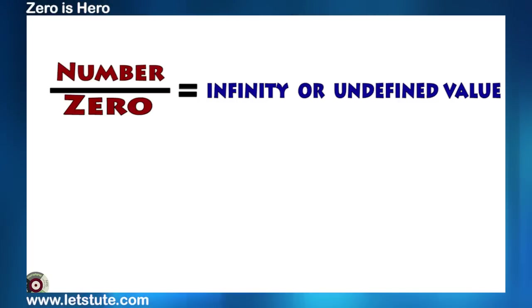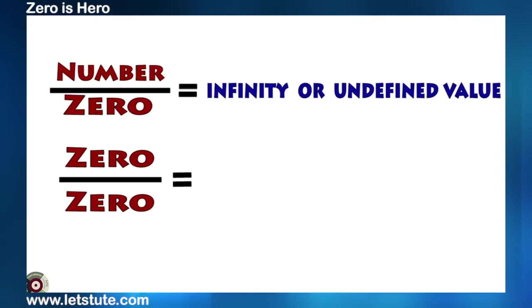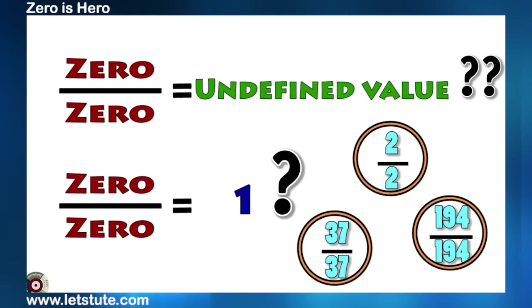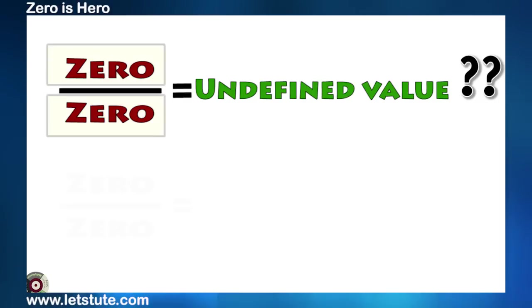Now, I am thinking what if we divide zero by itself? The result will again be undefined or it will be 1 because we know that if we have same numbers in both numerator and denominator, then answer is always 1. So, let's understand this with an example.